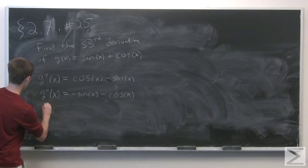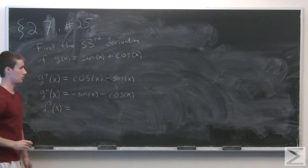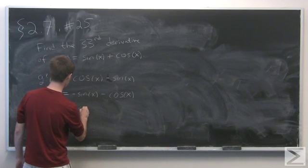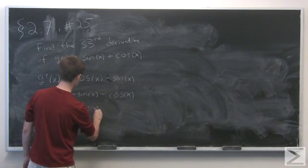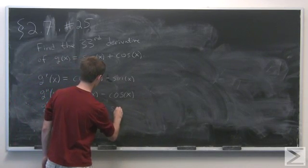Now the third derivative of g will be minus cosine of x plus sine of x. So g'''(x) = -cos(x) + sin(x).